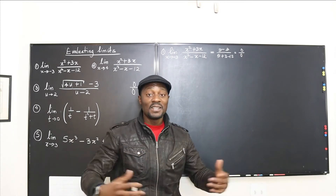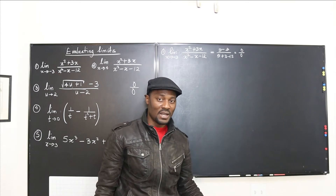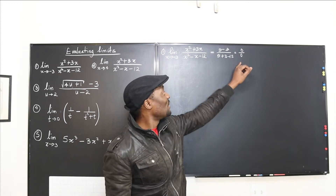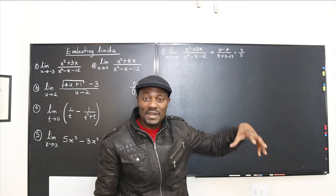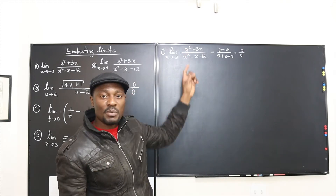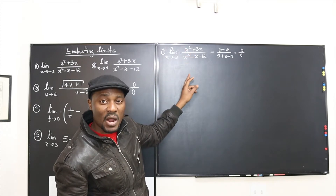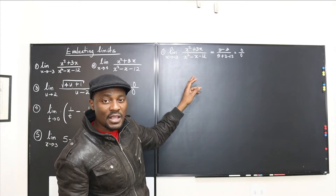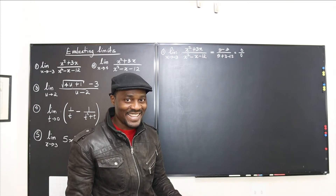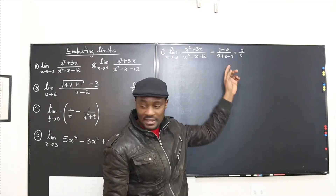Zero over zero is meaningless and it's not the limit of any expression. So I'm not done — but I'm glad I've got zero over zero because there's a definite answer. The first thought when you have a rational expression is: can I factor something from the top that I can also factor from the bottom? The answer is almost always yes.